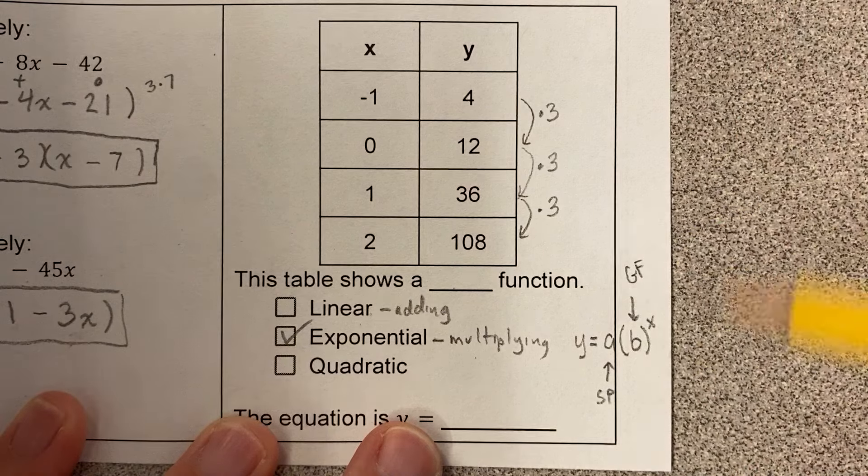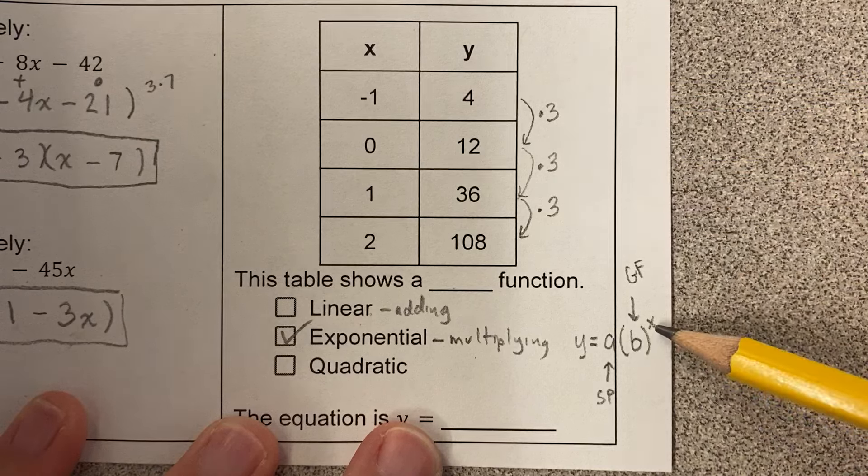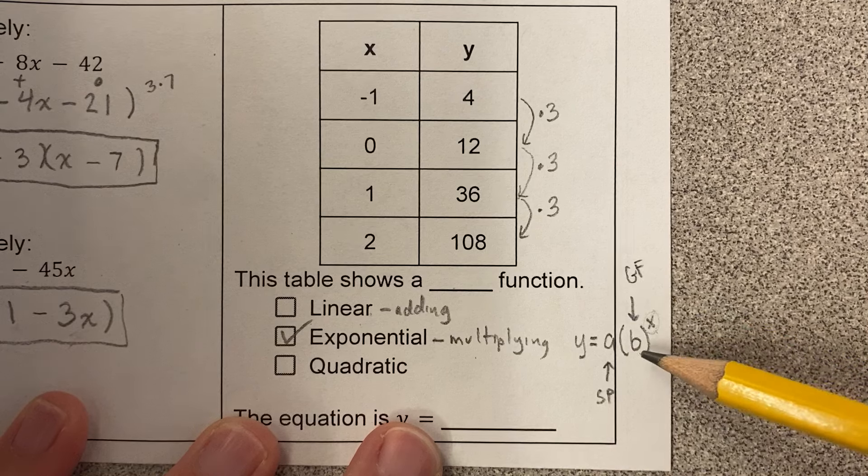And why is that? Because I'm starting with a number and then I'm multiplying it by 3 and then I'm multiplying it by 3 again, then I'm multiplying it by 3 again. So that's what changes here. As this x gets bigger, I multiply by 3 again and again and again.